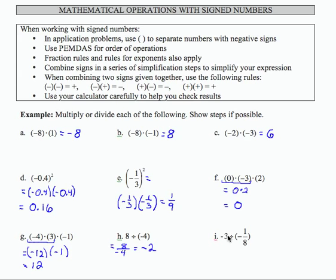In the last part, negative 3 divided by negative 1 eighth, I've got negative 3. Then I take the reciprocal of negative 1 eighth, which is negative 8. And the result of negative 3 times negative 8, I have a negative times a negative. That's going to give me a positive 24.